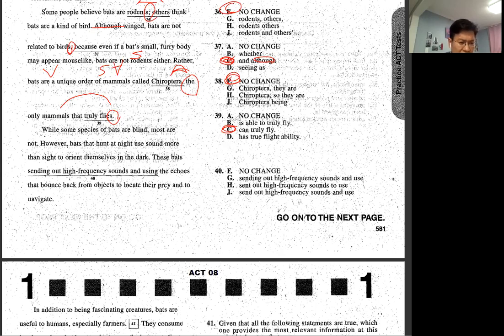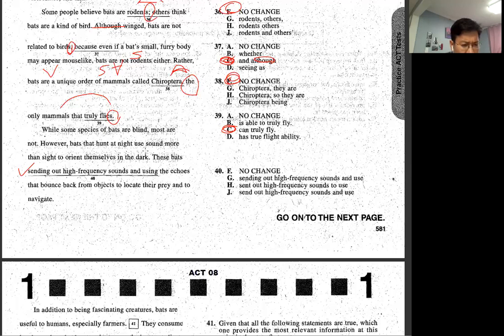These bats sending out high frequency sounds and using echoes. So then sending supposed to be verb, but then we don't have verb. So send out, send out. Let me see the hunt, night. Sound more like, so this is all present tense, right? So bounce backs, present tense. Now we have to put J.